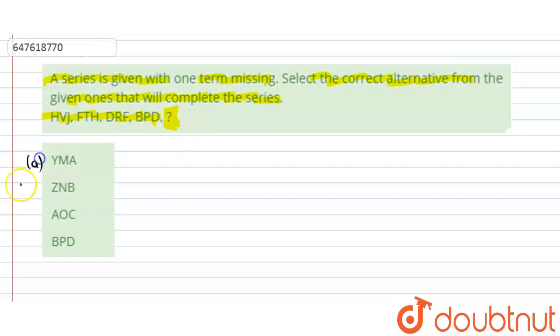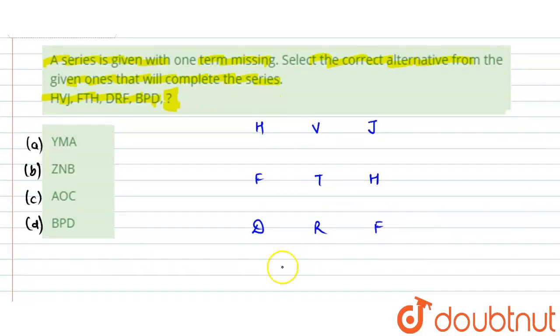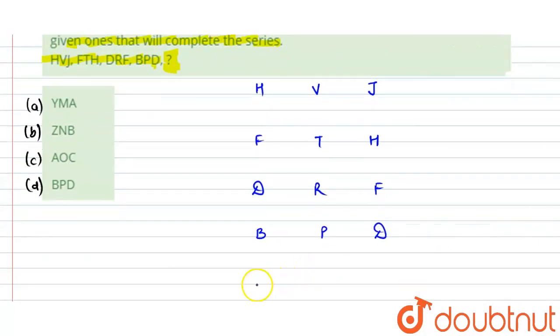Out of the given options we have, that is option A, B, C, and D. Now see, the first word is HVJ, next we have is FTH, next we have is DRF, next term given is BPD, and last we have to find. The fifth one we have to find out.